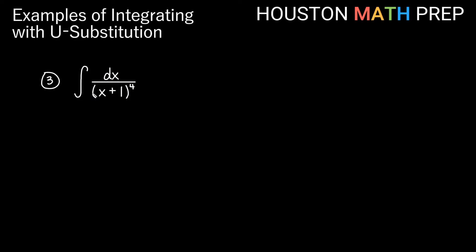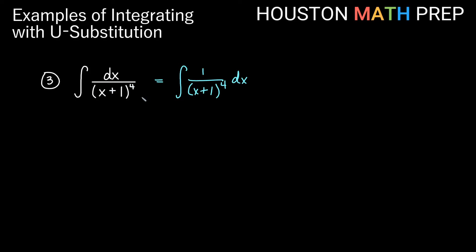For our third example, we have the integral of dx over the quantity x plus one all to the fourth. Having dx on top is the same as saying one over the quantity x plus one to the fourth with dx out here — they're the same thing. I don't think I need to let u equal the one on top. If I let the entire denominator be u, a chain rule would give me something complicated. So I'm going to choose u equals just the x plus one part.